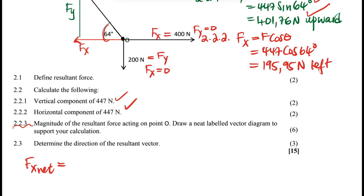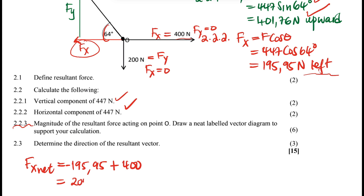The FX net: the horizontal component we calculated is 195.95 N but it points to the left, so it's negative. Plus the 400 N force pointing to the right, which is positive. So FX net = -195.95 + 400 = 204.05 N to the right.